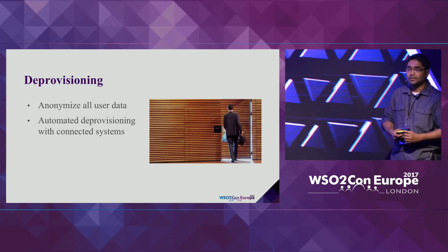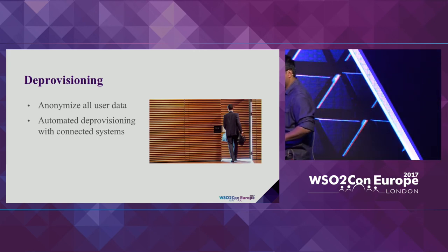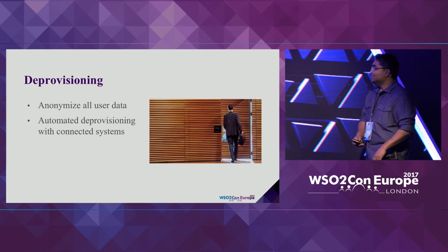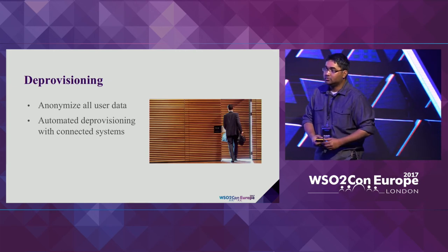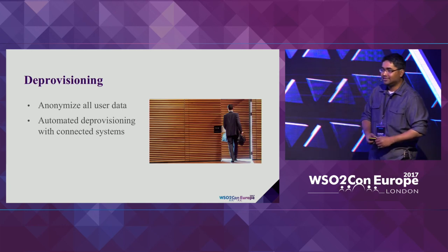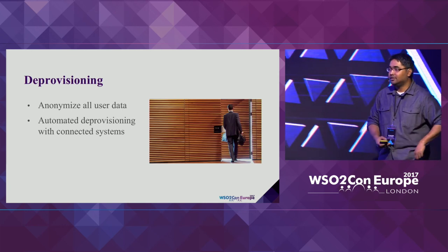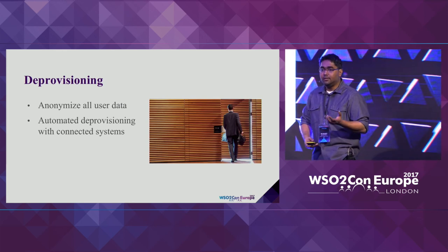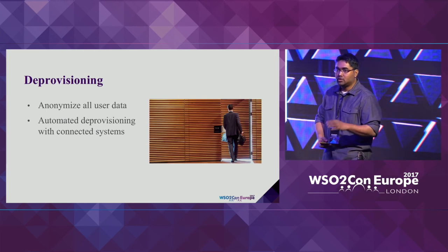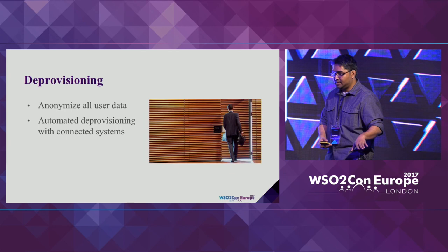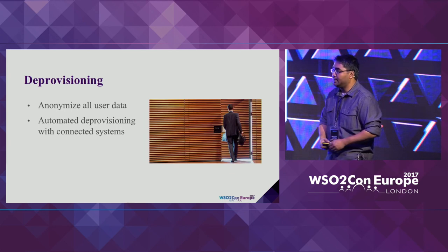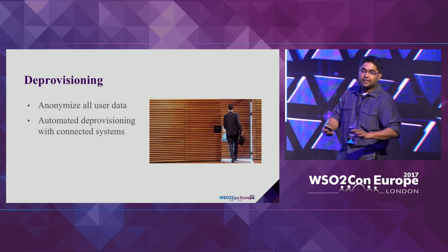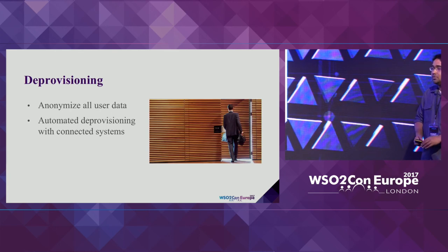Q: When will Identity Server 5.5 be released? A: Probably Q2 next year. Features related to GDPR will be pushed as warm updates on top of IS 5.4.0, which will be released before the end of this year. We are doing a detailed session tomorrow, so if you have more questions we can discuss them then.